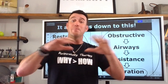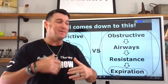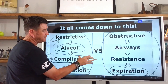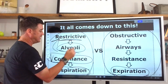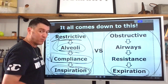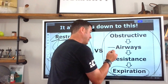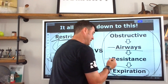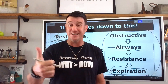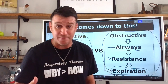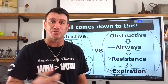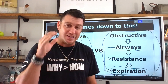It all comes down to these two things. Your understanding of respiratory therapy will massively improve if you understand that restrictive diseases affect the alveoli, decrease compliance, and the problem lies on inspiration — while obstructive patients have airway problems, increased resistance, and need help getting air out. This will make PFTs, mechanical ventilation, and pharmacology all make sense.